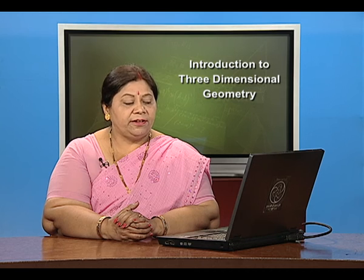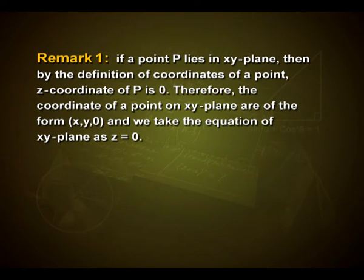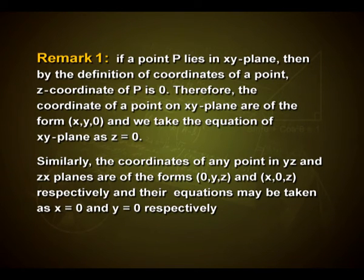An important remark: if a point P lies in the xy plane, then by the definition of coordinates, the z-coordinate of P is 0. Therefore, the coordinates of a point in the xy plane are of the form (x, y, 0) and the equation of the xy plane is z = 0. Similarly, the coordinates of any point in the yz plane and zx plane are of the form (0, y, z) and (x, 0, z) respectively, and their equations are x = 0 and y = 0 respectively.